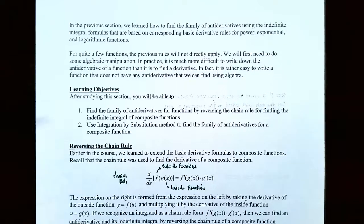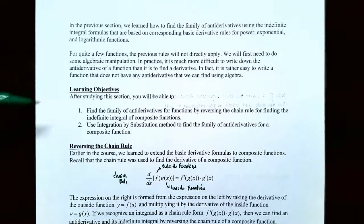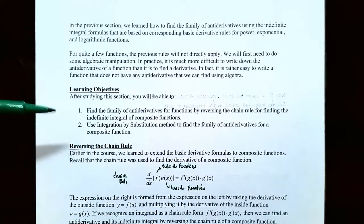What we're going to find out in this section is that it's much more difficult to write down the antiderivative for a function than it is to find a derivative. In fact, it's actually easy to write a function that does not have an antiderivative we can find using algebra. What we're going to talk about in this video is finding the family of antiderivatives for functions by reversing the chain rule for finding the indefinite integral of composite functions — specifically, how to use the integration by substitution method to find the family of antiderivatives for a composite function.